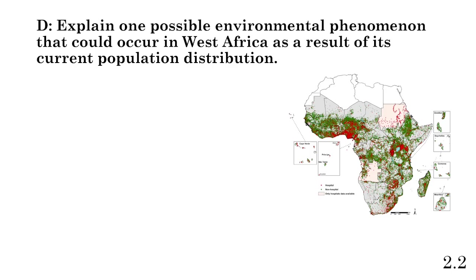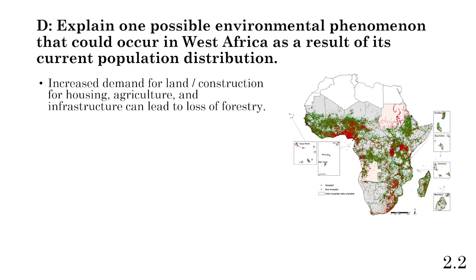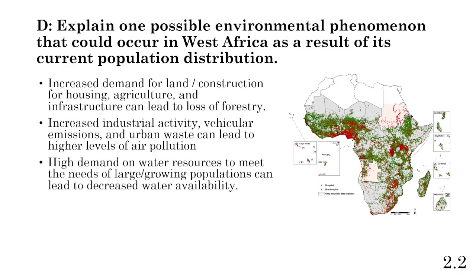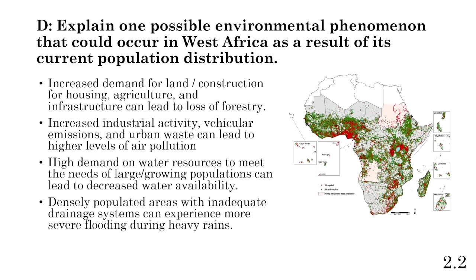Part D: explain one possible environmental phenomenon that could occur in West Africa as a result of its current population distribution. Increased demand for land and construction for housing, agriculture, and infrastructure can lead to loss of forestry. Increased industrial activity, vehicular emissions from concentrated traffic, and large volumes of urban waste can lead to high levels of air, soil, and water pollution. High demand on water resources and densely populated areas with inadequate drainage systems can also experience more severe flooding during heavy rains.